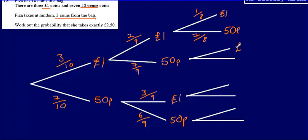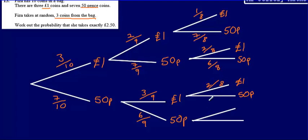If she's chosen a £1 and then a 50p, there are two £1 coins left and six 50p coins left out of eight total. For a 50p then a £1, those are the same probabilities: two £1 coins out of eight, and six 50p's out of eight. If two 50p's have been selected, there are three £1 coins still left out of eight coins total. And for the last branch, three 50p's, that's five eighths because there are only five 50p's left.